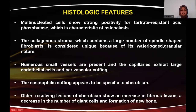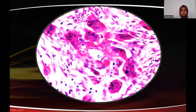In older regions of the lesion, there is an increase in fibrous tissue and a decrease in multinucleated giant cells. There are plump fibroblasts, eosinophilic fibroblasts, characteristic fibrous stroma, and eosinophilic cuffing on the endothelial lining.